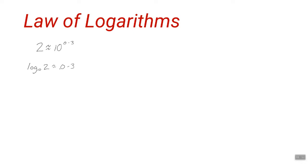This is how we talk about logarithms and how they compare to indices. When you see log base 10 of 2, sometimes we don't bother writing the 10 — people just write log of 2 equals 0.3, omitting the base. If there's no base, we assume it's meant to be base 10. That can be ambiguous, so to avoid that and save time, you'll occasionally see log base 10 written as LG. So LG means log base 10.